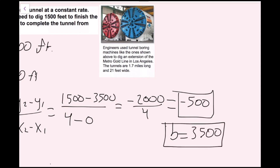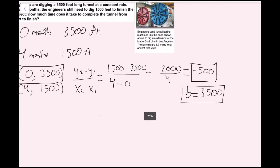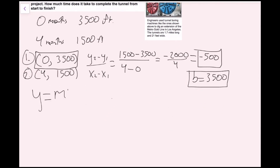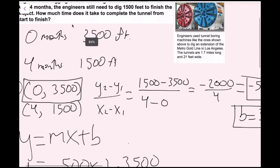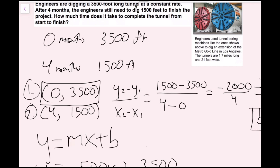Now I have what I need to write a linear equation in slope-intercept form. Remember, y equals mx plus b. My slope is negative 500, and my y-intercept is 3,500. So my equation is y equals negative 500x plus 3,500. Remember, x is the amount of months and y is the amount of feet that still needs to be dug. We want to figure out how much time it takes to complete the tunnel — in other words, how much time until we have 0 feet left to dig.